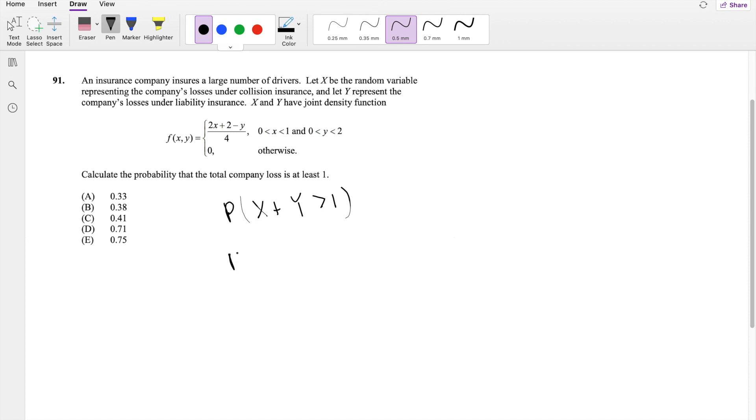So this is also equivalent to saying, what is the probability that Y is less than 1 minus X? And I'm going to draw the graph real quick, even though it is easy to do without a graph.